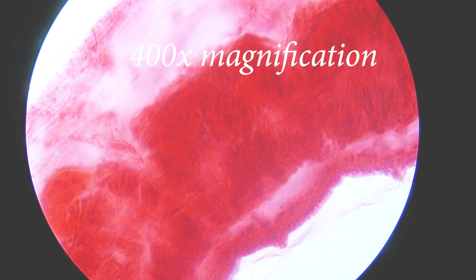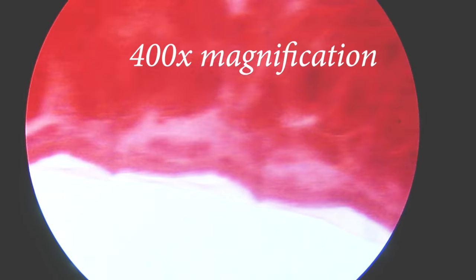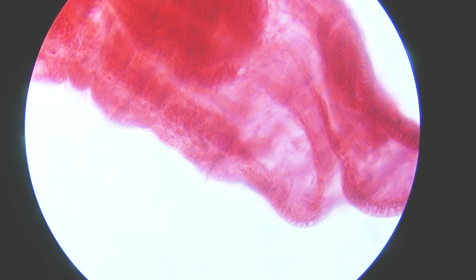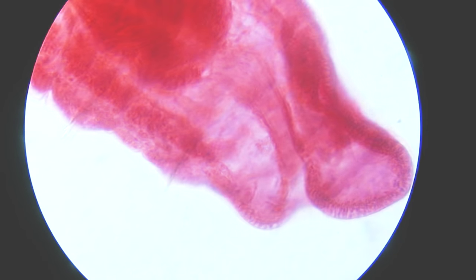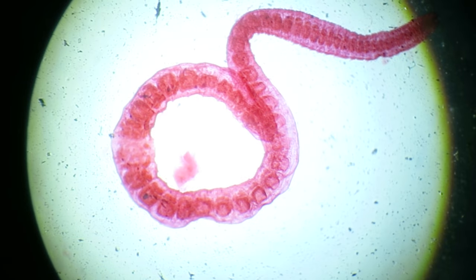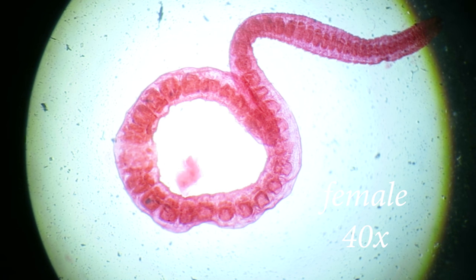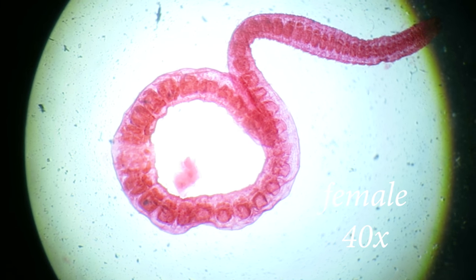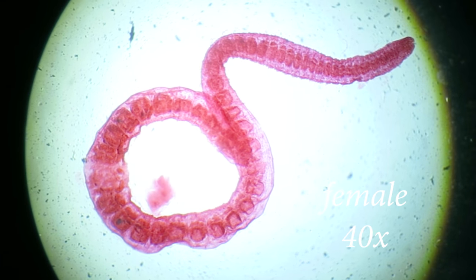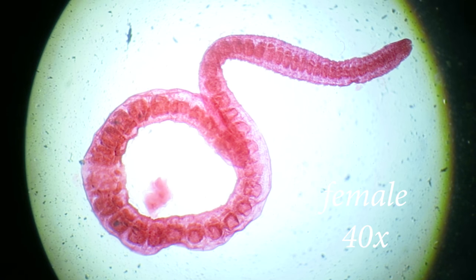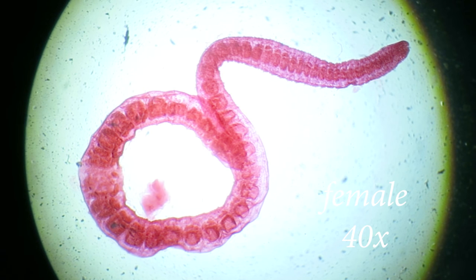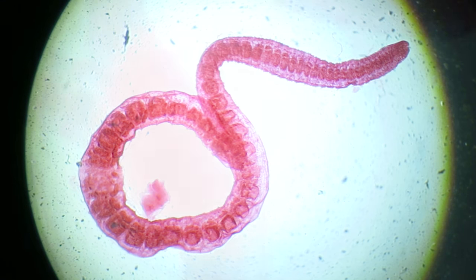Adult schistosomes share all the fundamental features of the Digenea. They have a basic bilateral symmetry, oral and ventral suckers, a body covering of a syncytial tegument, a blind digestive system consisting of mouth, esophagus, and bifurcated caeca. The area between the tegument and alimentary canal is filled with a loose network of mesoderm cells, and an excretory or osmoregulatory system based on flame cells.